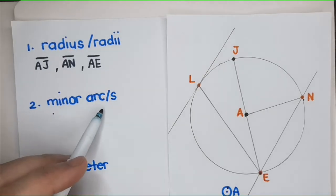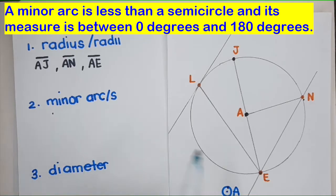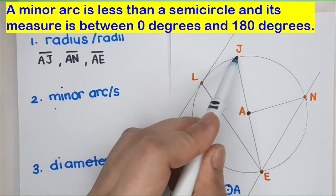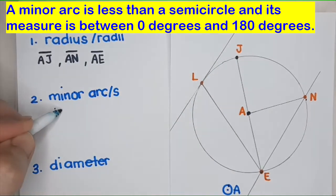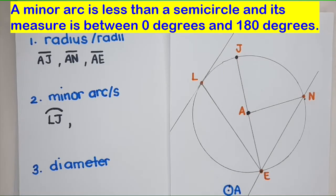Moving on to minor arc or minor arcs. A minor arc is less than a semicircle — that is, half of a circle. So it measures between 0 degrees and 180 degrees. To name a minor arc, we use two letters. Let's list down all the minor arcs in this figure that are less than 180 degrees. Arc LJ — do you see other minor arcs?